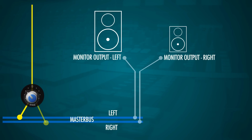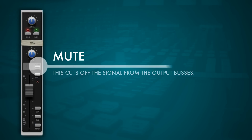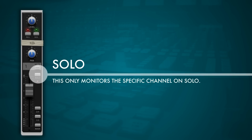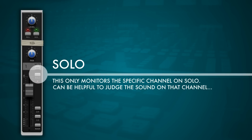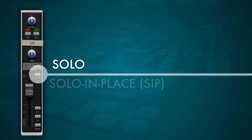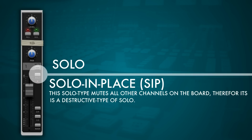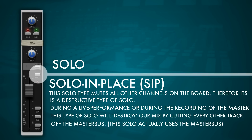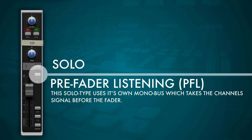In the fader section we also find a mute button, which completely removes the channel from the mix bus. Besides that, there's usually a solo button. There are a couple of types of solo: solo-in-place (SIP) mutes all other channels, cutting them from the stereo bus — it's a destructive type of solo that will ruin our stereo mix. The advantage of solo-in-place is a good representation of the exact sound as it is in the mix. The disadvantage is that during a live or master recording, pressing solo removes all other instruments.